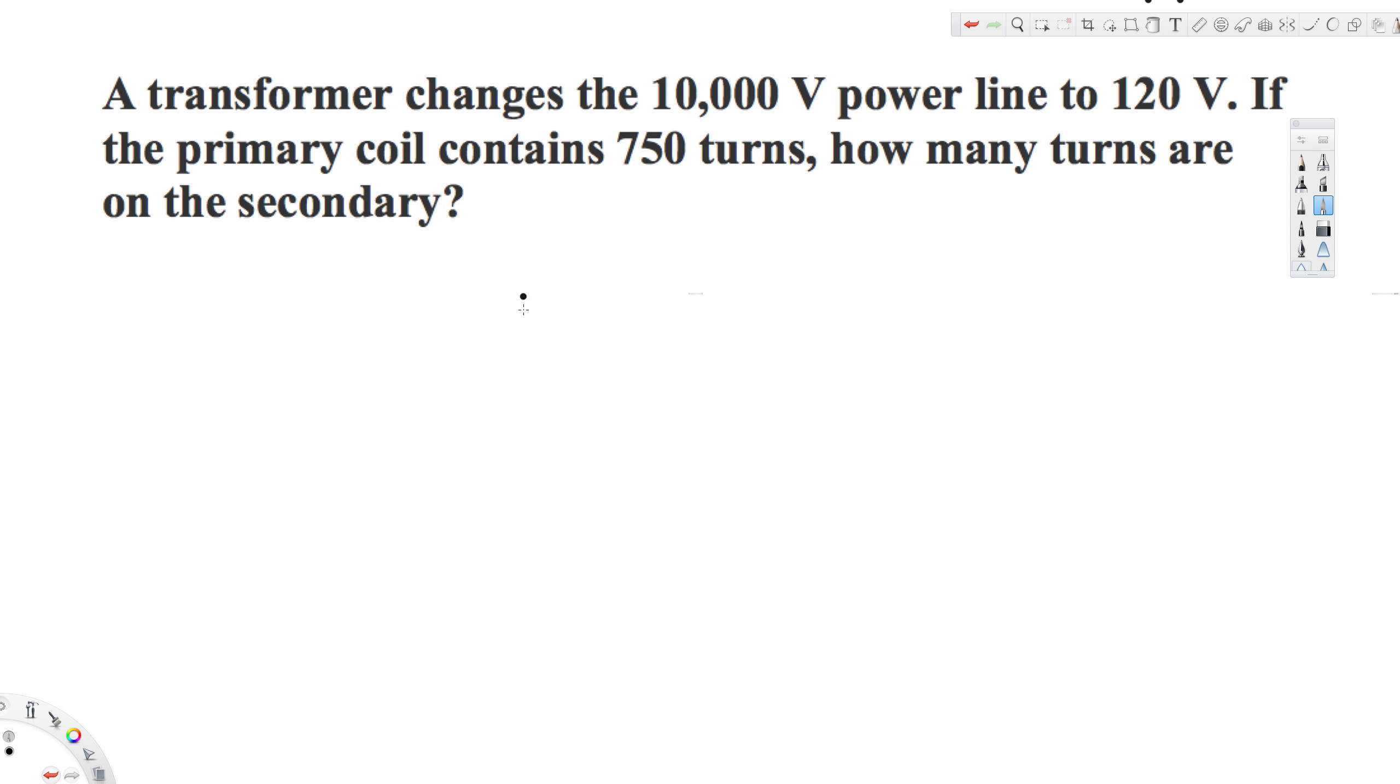Okay, what's going on guys, let's look at this problem right here. This question is asking: a transformer changes the 10,000 volt power line to 120 volts. If the primary coil contains 750 turns, how many turns are on the secondary?